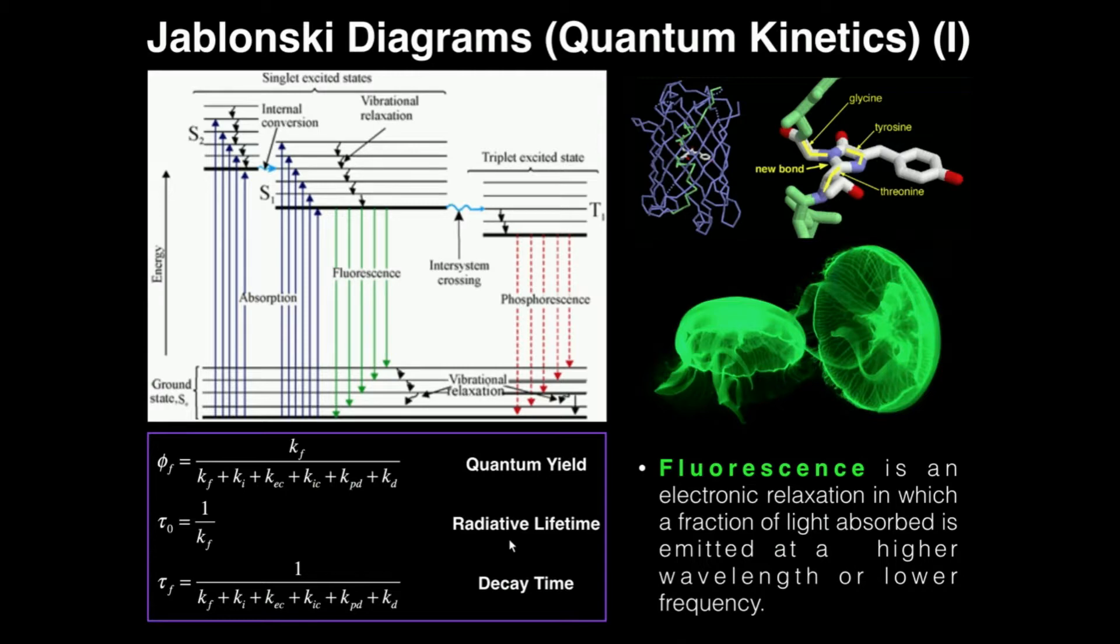Some other properties that are important to be able to calculate or at least understand is, first of all, what's called the radiative lifetime. The radiative lifetime is denoted by tau sub-naught, and it's equal to one divided by the rate constant for fluorescence. So it's pretty much just the reciprocal of that rate constant. That's your radiative lifetime.